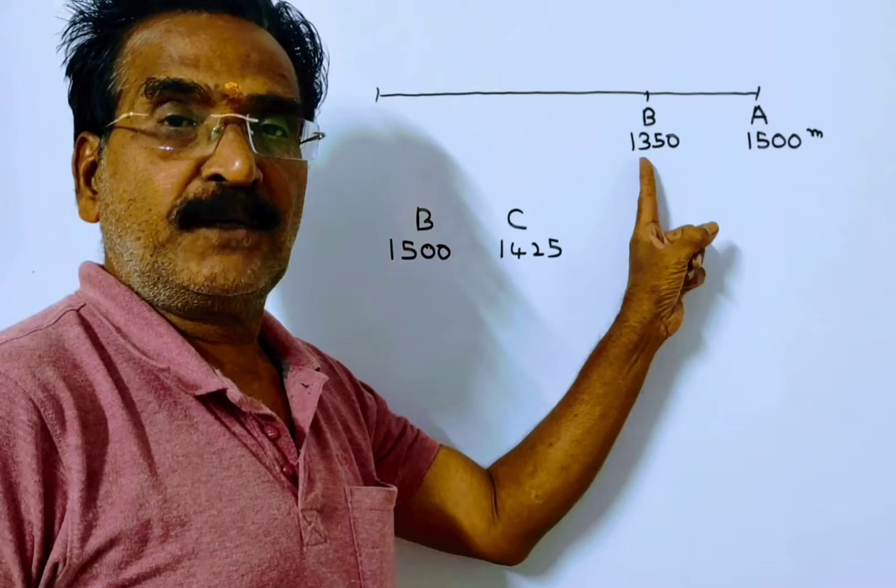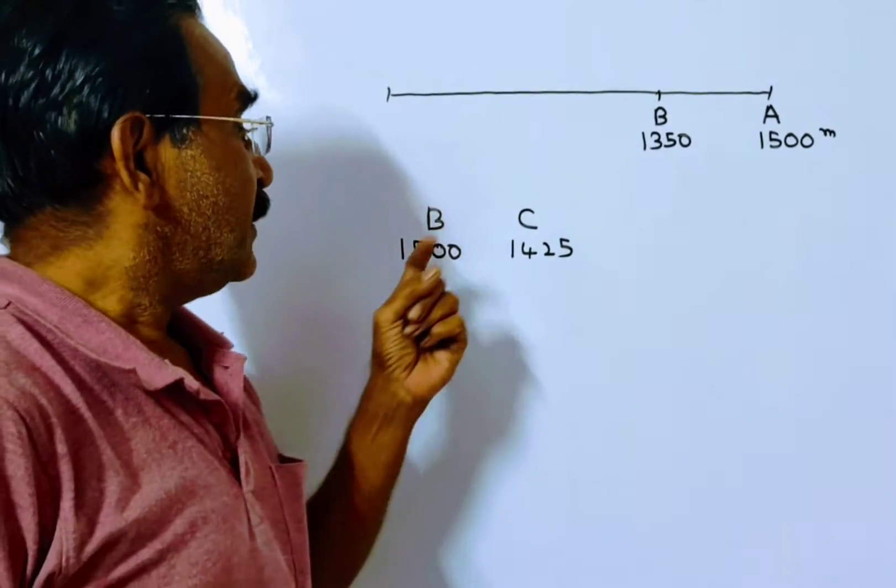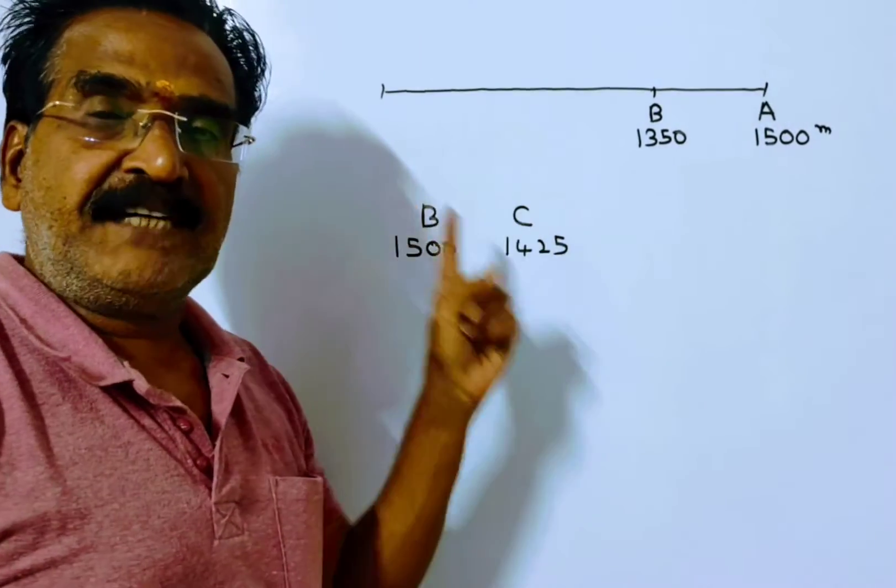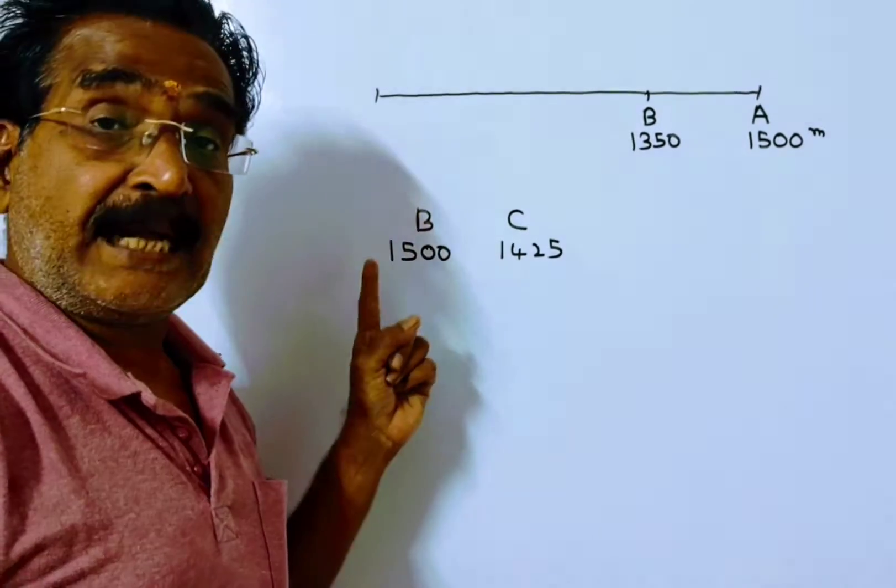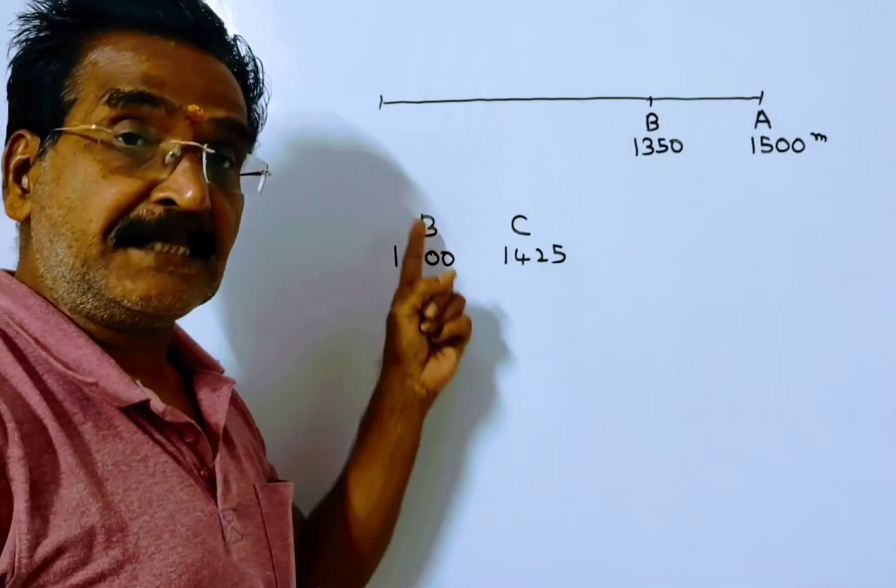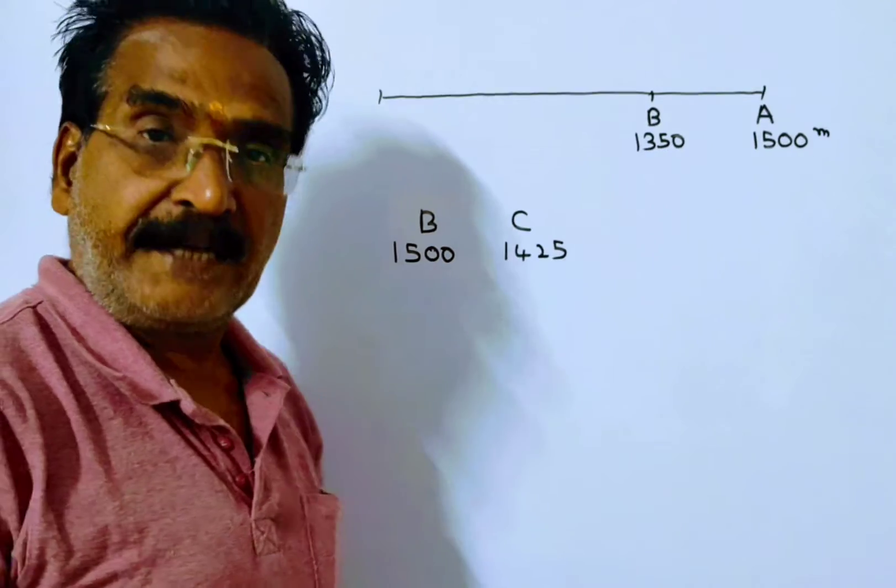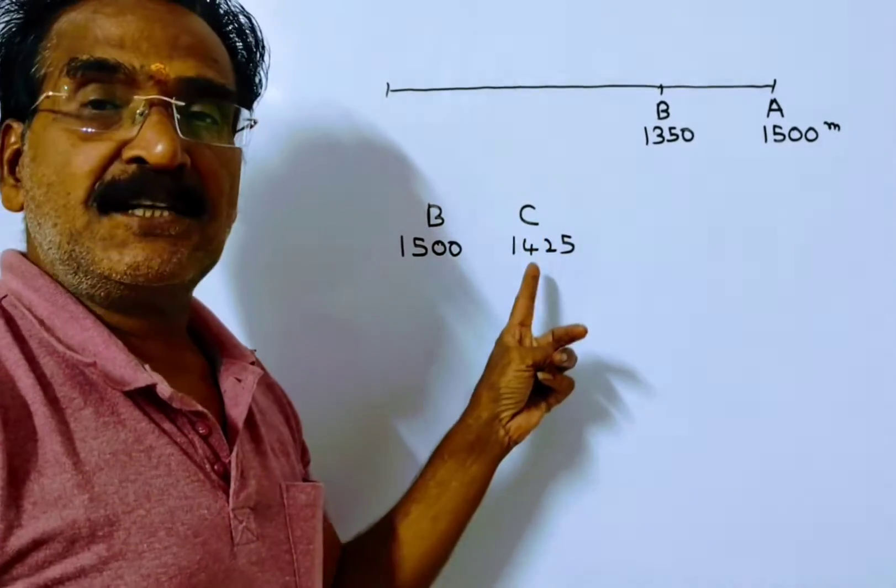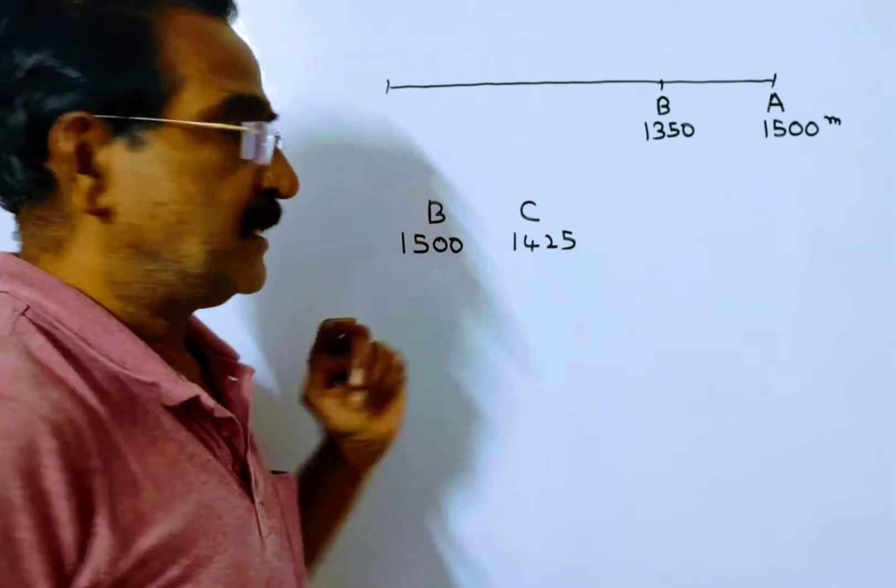B travels only 1350 meters. And B beats C by 75 meters means by the time B travels 1500 meters, that means by the time B finishes the race,